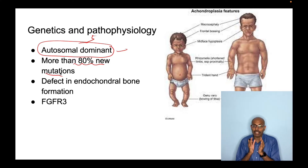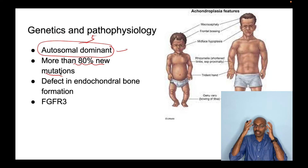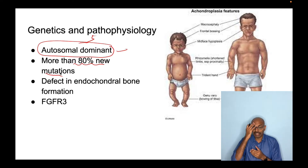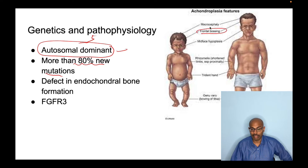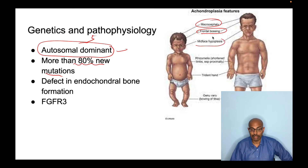Therefore, the clavicle, trunk, and skull are normal in achondroplasia. This is why you have a bigger-looking skull compared to the rest of the limbs, causing macrocephaly or frontal bossing. The nose is also peculiar in shape because it is normal in size relative to the shortened limbs.